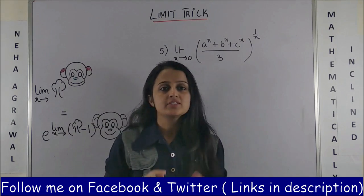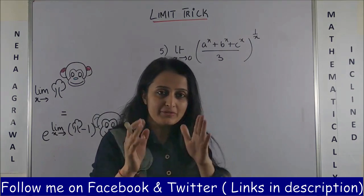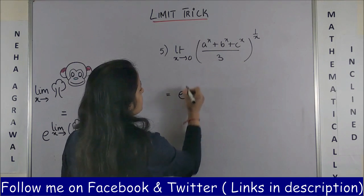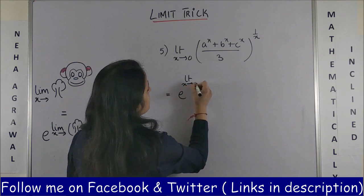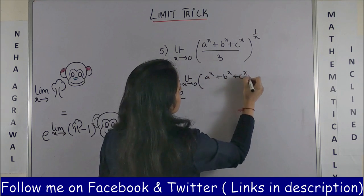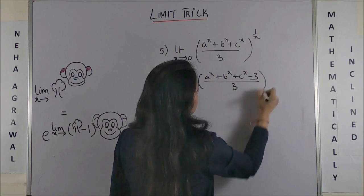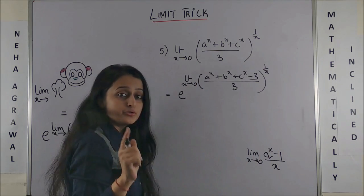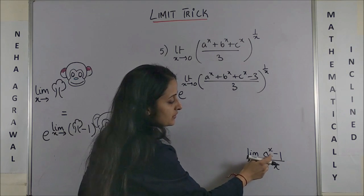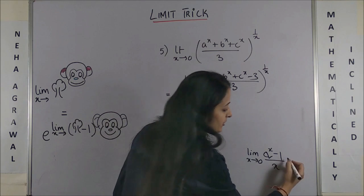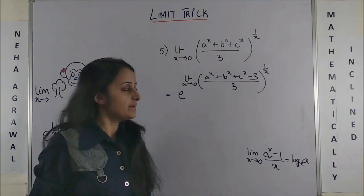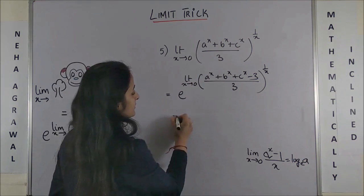Coming to this huge-looking fifth question, we would be able to tackle it very quickly. So once again, e to the power limit extending to zero. Once you subtract, you will be left with this. Now here I'm going to use one more limit formula, which is limit extending to zero: (a^x - 1)/x always gives us the answer log a to the base e. So I want to create the same thing here.